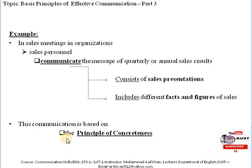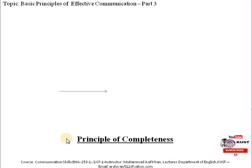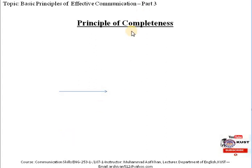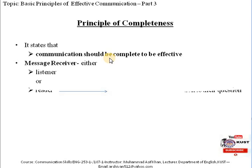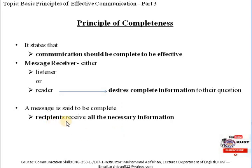Now let's move towards another principle — the principle of completeness, which is very much connected to the first principle. All these principles together make communication effective. The principle of completeness stands for communicating a complete message to be effective. If the message receiver — either listener or reader — desires complete information and has questions, it means the message is not complete. A message is said to be complete when the recipient receives all important information, meaning the message has all the details and we need not ask anything about it.